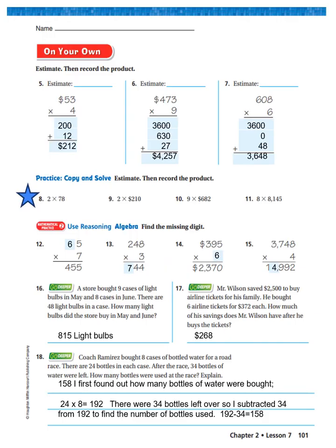Okay, we have three more problems and still another page. This is a long lesson. Sorry, boys and girls, but I wanted to make sure that you understand this. And again, if you were getting the answers correct, you don't need to go through the explanation. You can go to the next slide, but here we go. It says a store bought nine cases of light bulbs in May and eight cases in June. There are 48 light bulbs in a case. How many light bulbs did the store buy in May and June? All you're going to do is nine times 48, or then eight times 48. You add it together and you get 815 light bulbs.